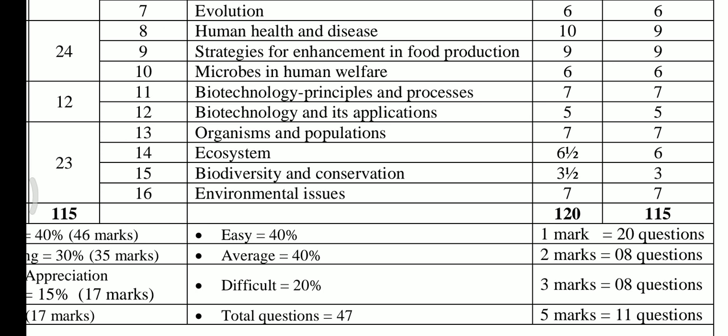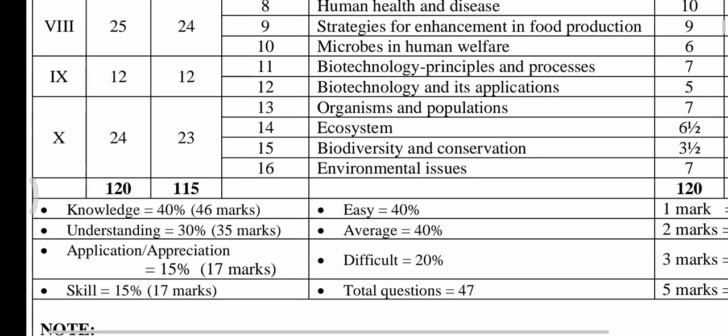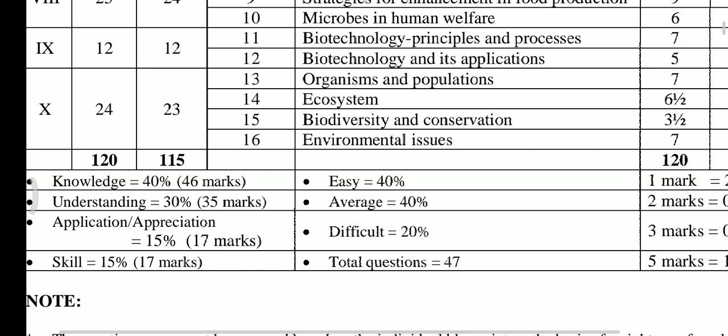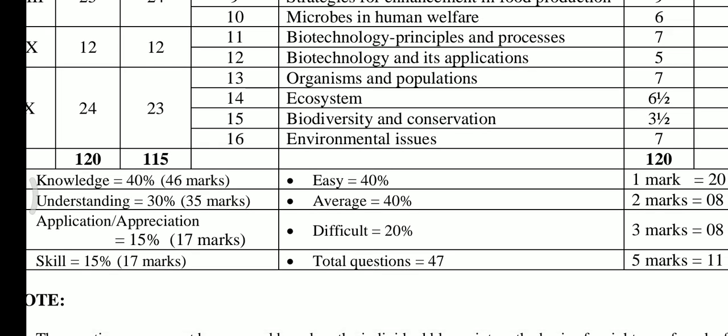Unit 9 has two chapters with a total weightage of 12 marks. Biotechnology: Principles and Processes is for 7 marks, and Biotechnology and Its Applications is for 5 marks.